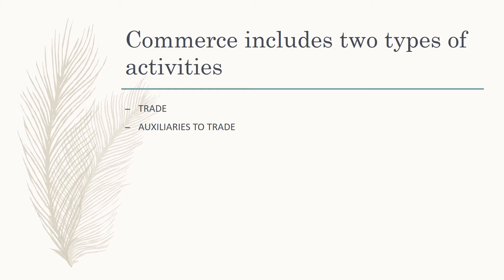Whatever goods are manufactured in industry, the work of trade is to purchase those goods from the manufacturers and sell them to the consumers. In trade, they are not going to manufacture any goods. The actual work of trade is to buy goods from manufacturers and sell them to the wholesaler, retailer, or ultimate consumers.